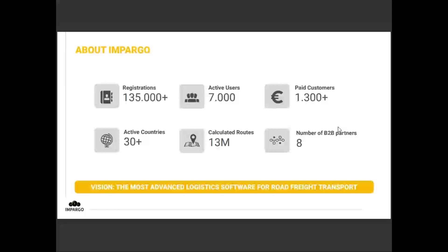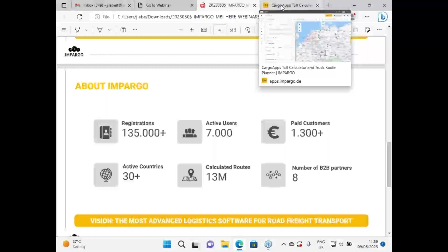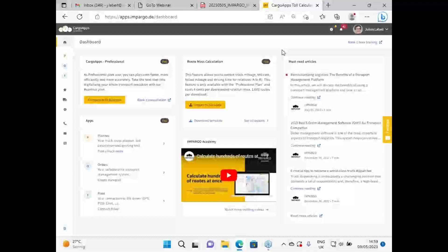Before I jump into the demo, a few background numbers so you have a feeling for our company size and product maturity. We started in 2017, we're a startup from Berlin. We now have around 130,000 to 140,000 registrations. We're a freemium platform, so not everyone who registers becomes an active user — we have around 8,000 active free users, 1,300 paying customers, and these are all spread across 30 countries. We basically have paying customers in all European countries — we are a European solution.